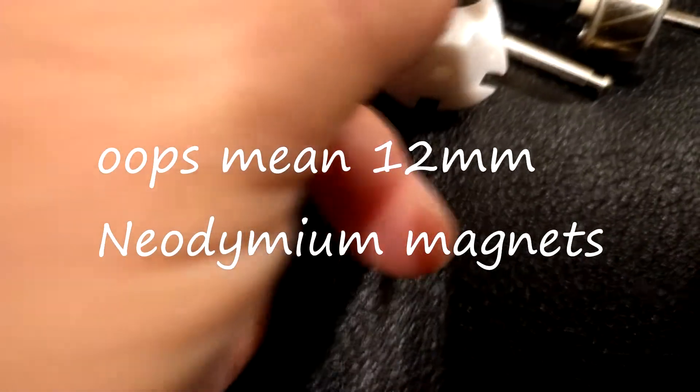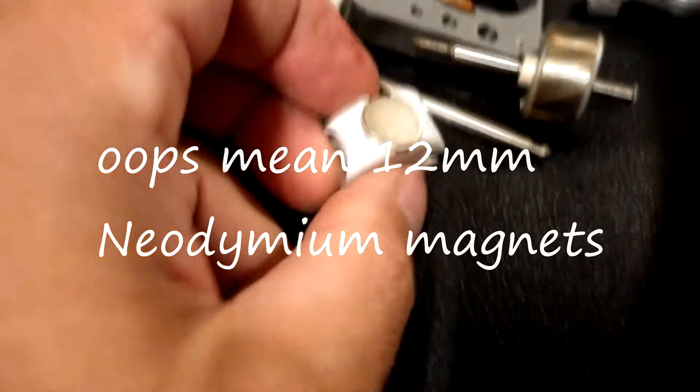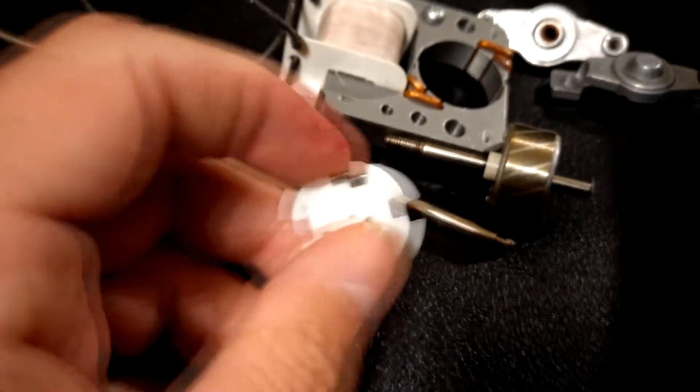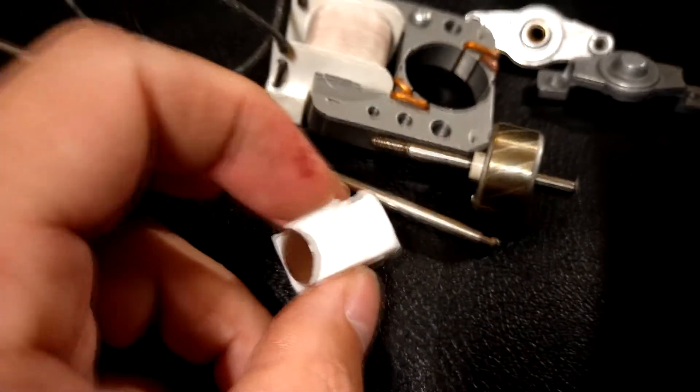Now this is a 12 volt magnet, which is on those, I forgot what they call them now at the moment. Now that fits in there nicely. So what I will do is glue it in there, so then I'll create the North and the South.